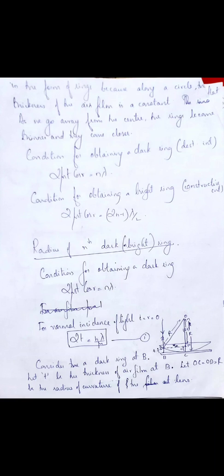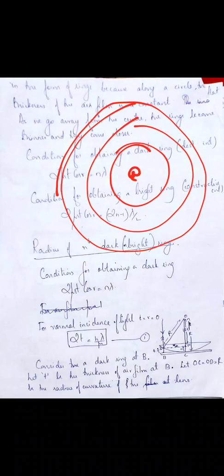When you place a plano-convex lens on an optically plain glass plate, you get a thin air film of varying thickness. When you allow monochromatic light to fall on it normally, a part of it gets reflected from the top of the air film and another part from the bottom. These two reflected rays superimpose and you get the interference pattern in the form of alternate dark and bright rings. Now you have to find the expression for the radius of these dark rings and the radius of the bright rings.